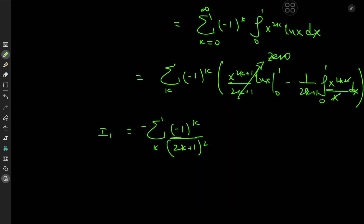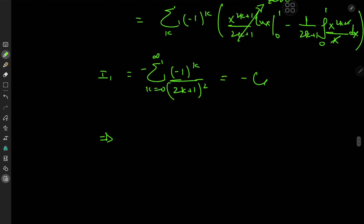This infinite series is Catalan's constant G. So I sub 1 equals negative G. This implies that the target integral I sorts out to pi over 4 log 2 minus Catalan's constant G. That's the result.